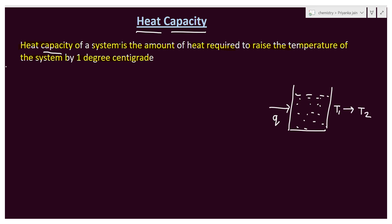Heat capacity is represented by C. Heat capacity is actually Q divided by T2 minus T1. If we divide the amount of heat provided to the system by the temperature difference, we get the heat capacity. So C = Q / (T2 - T1). It is a variation of heat with temperature, so in more general terms we write C = dQ/dT.